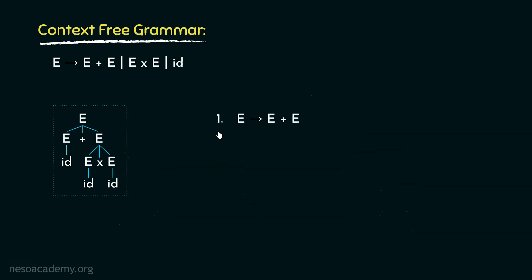Now, the first rule should definitely be e can be rewritten as e plus e. Remember this — we are keeping this rule as the first one because precedence-wise, addition is lesser than multiplication and hence, if it has to be derived, it should be derived before multiplication. Now, by definition, plus is left associative.